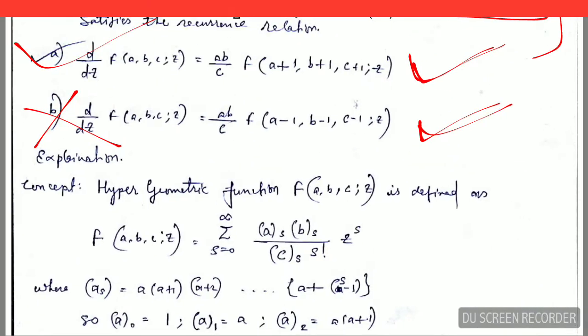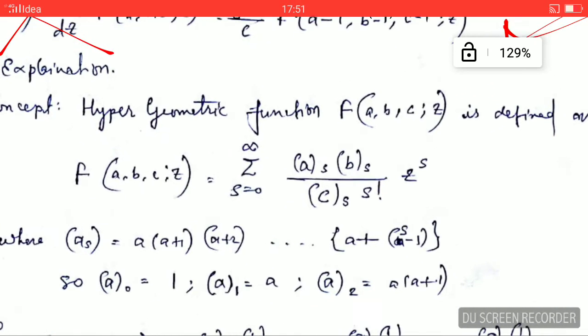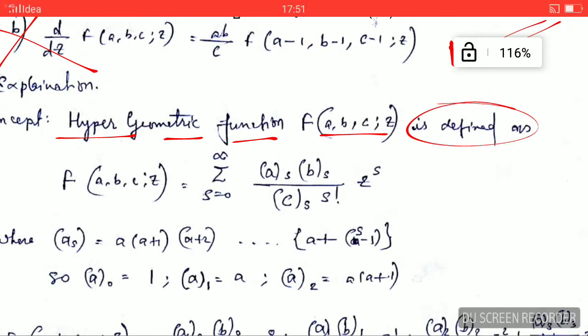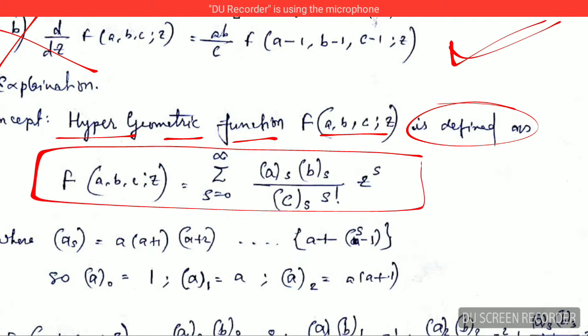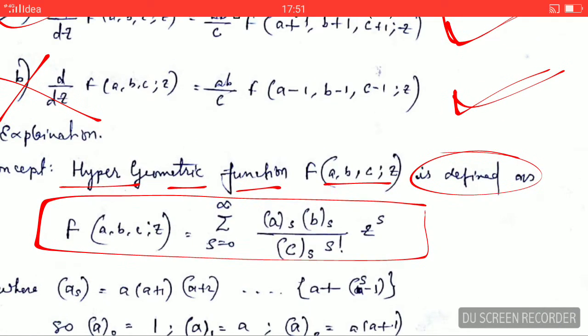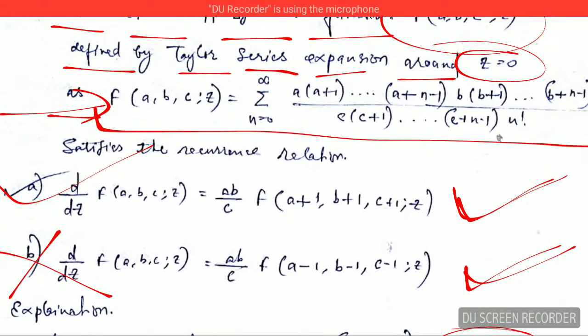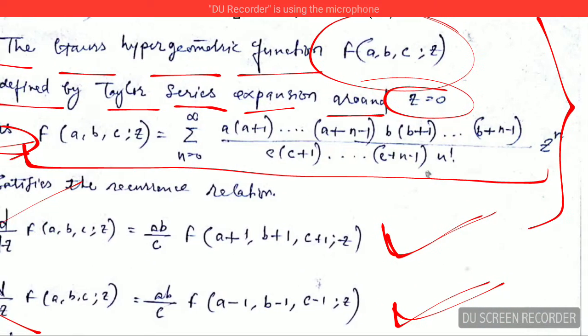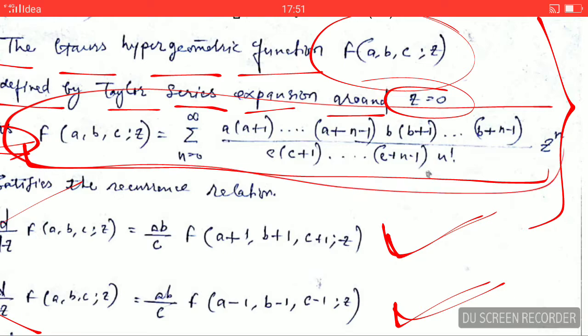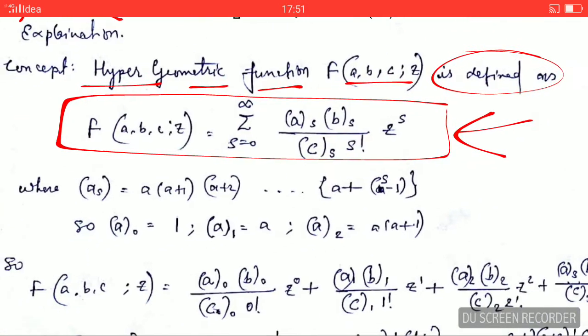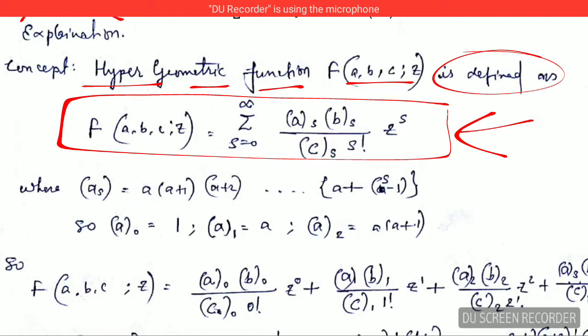The first thing is that either you can remember that hypergeometric function F is defined this way, or if you don't remember, there won't be any problem because you can easily form this equation with the help of the formula they have already given you. So that does not require you to remember it, but if you know this already then it will be better. This is the hypergeometric function that is well known, it has this form.